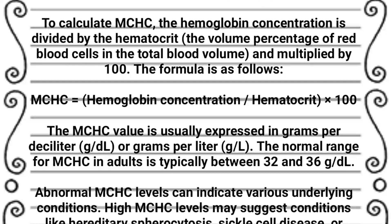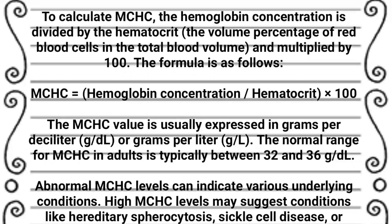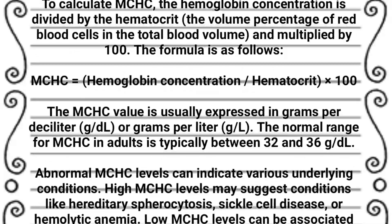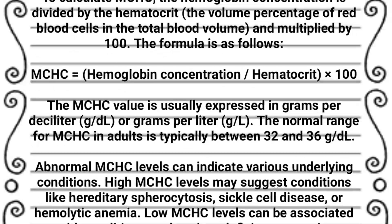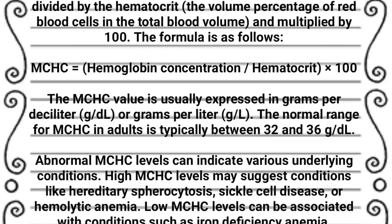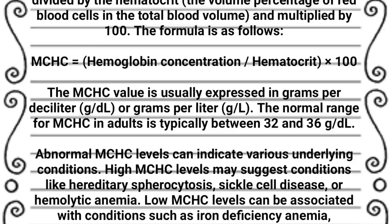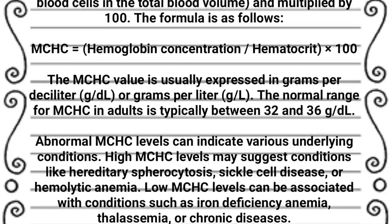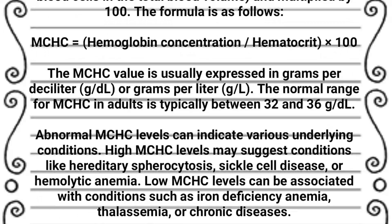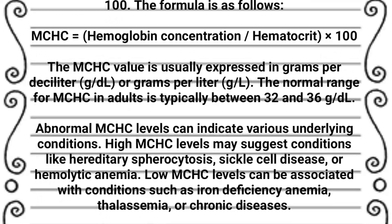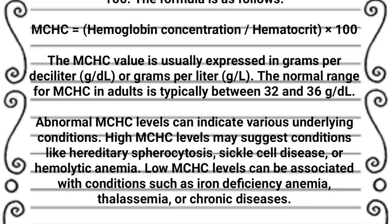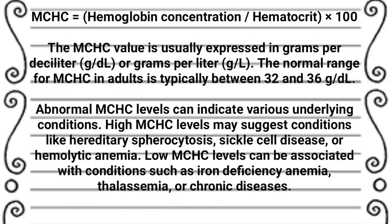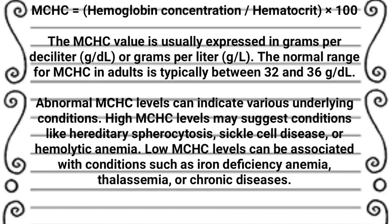The MCHC value is usually expressed in grams per deciliter or grams per liter. The normal range of MCHC in adults is typically between 32 to 36 grams per deciliter.